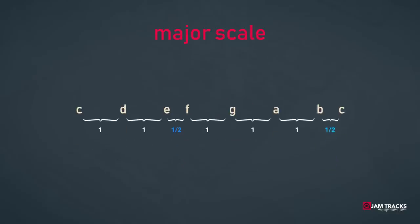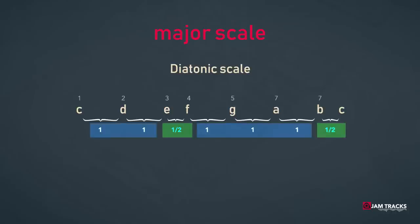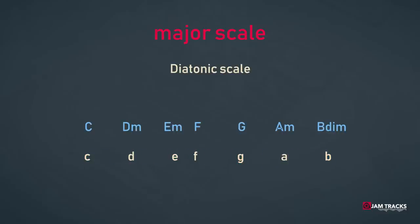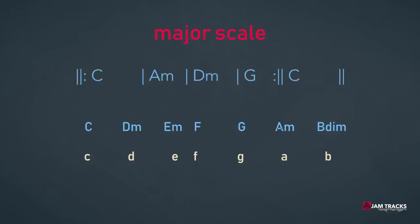The major scale, among others, is called a diatonic scale — a seven-note scale with five whole steps and two half-steps. It's this kind of scale in which we can build chords on every note of the scale, and we can then create sequences of chords that form chord progressions.